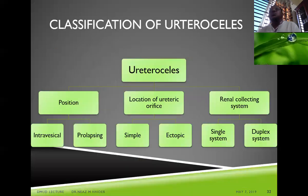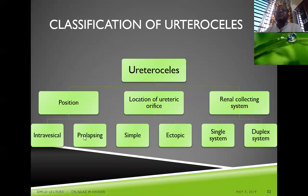Ureteroceles are classified according to position — intravesical or prolapsing; according to location — simple (orthotopic) or ectopic; and according to the collecting system — single system or duplex system.